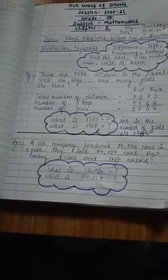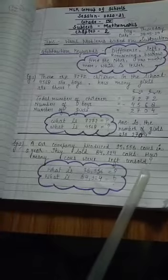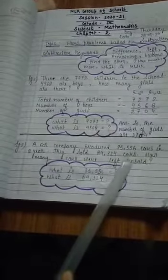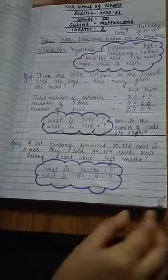And 84,324 number of cars sold. Okay? Now what we have to find in the given question? How many cars were left unsold? Here left is a subtraction keyword. Did you notice? Yes, left is a subtraction keyword. So let's start the solution.